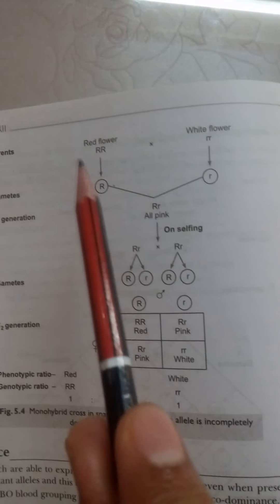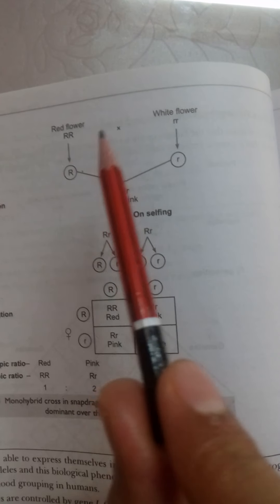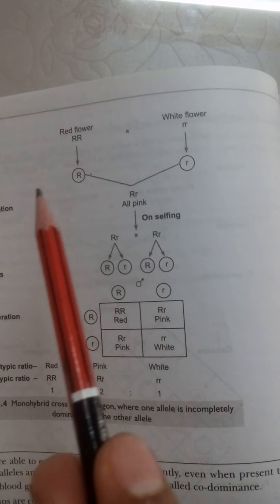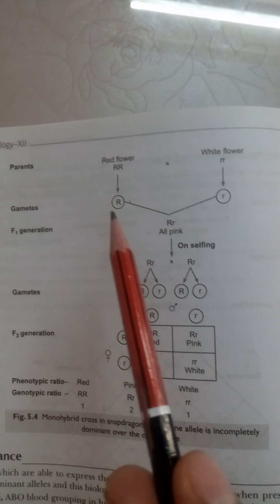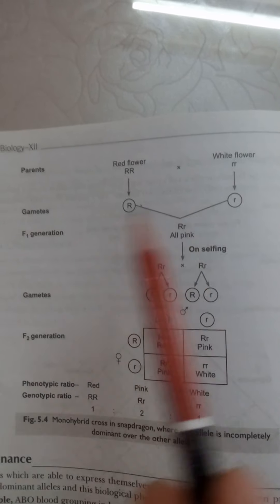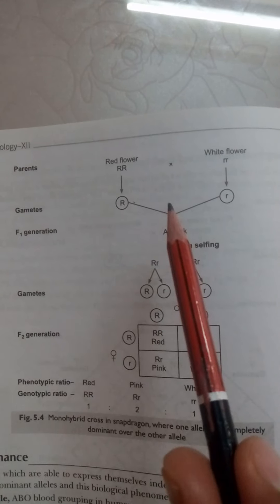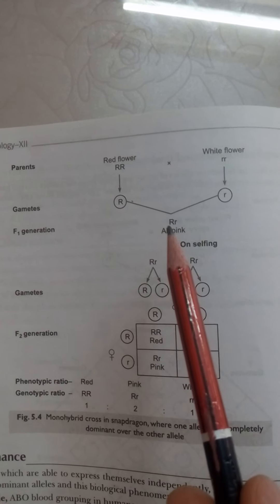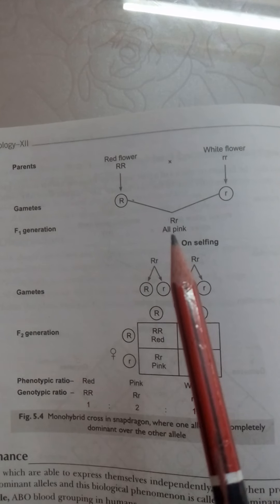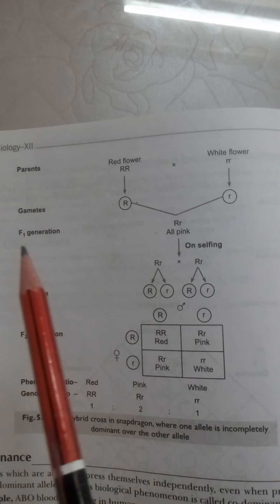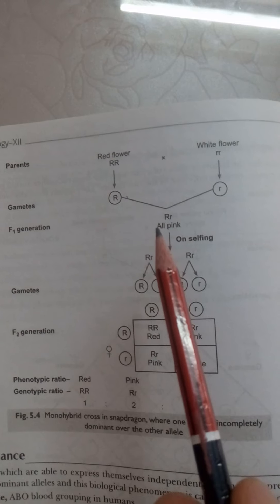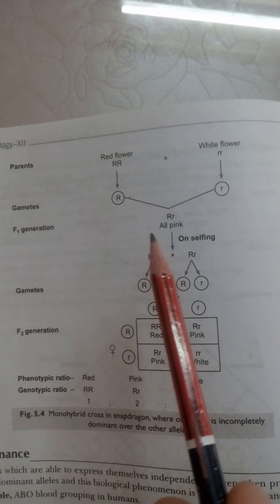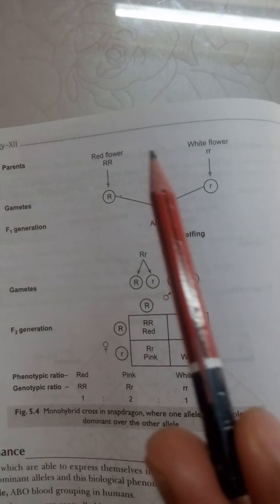When he crossed red flower and white flower, gametogenesis produces gametes which are haploid. When the fusion of gametes takes place, a zygote is formed and a plant is developed. All plants of F1 generation bear pink flowers, intermediate of both the parental traits.